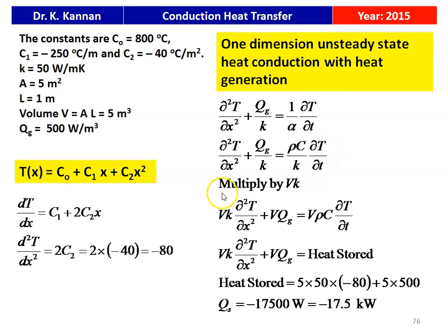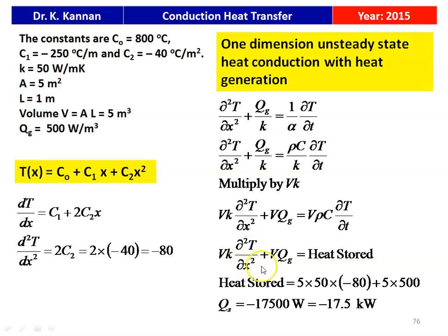Multiplying the heat equation through by volume V and thermal conductivity K: VK(∂²T/∂x²) + V·q_g = V·ρc·(∂T/∂t). The term V·ρc·(∂T/∂t) is the rate of energy stored. Substituting: V = 5 m³, K = 50, d²T/dx² = −80, q_g = 500. Energy stored = 5×50×(−80) + 5×500 = −20,000 + 2,500 = −17,500 watts = −17.5 kilowatts.